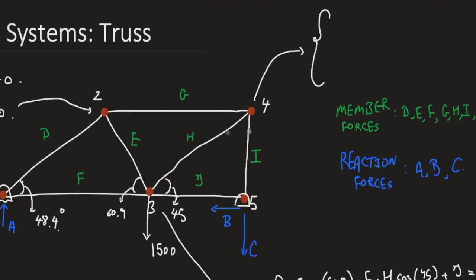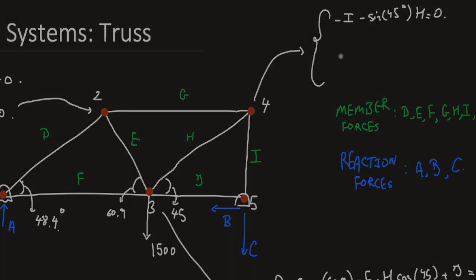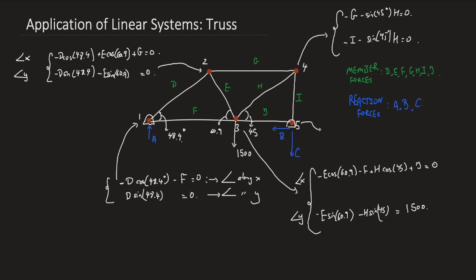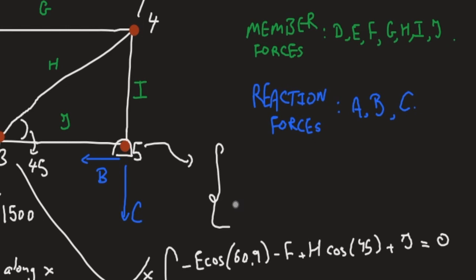Let's go to pin four. Projecting along the x-axis, we have I and H. The G cancels out, so we get minus I minus sine 45 H equals zero. Actually, this guy is minus G because G is the one along the x-axis. Since I is along the y-axis, we get minus I minus sine 45 times H equals zero. Last but not least, pin five. At pin one we forgot the A along the y-axis, so here we should insert minus A. Now pin five, projecting along the x-axis, we get minus B minus J equals zero. Along the y-axis we get minus C plus I equals zero.